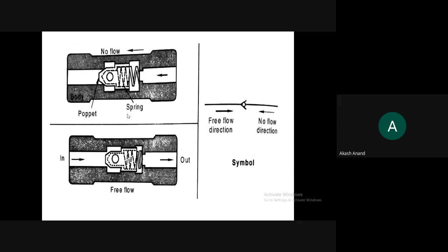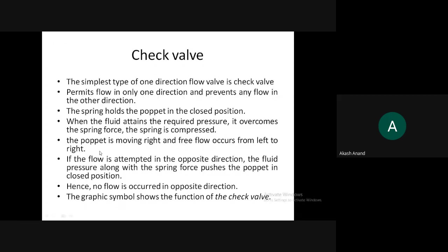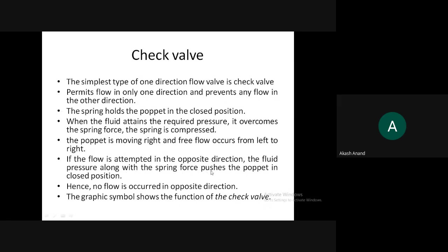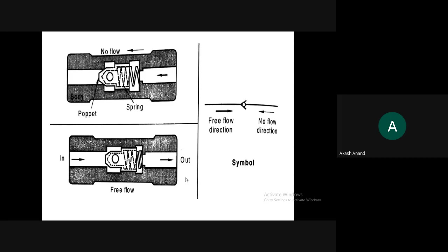If flow is attempted in the opposite direction, the fluid pressure along with the spring force pushes the poppet into the closed position, so no flow occurs in the opposite direction. The graphical symbol of a check valve shows an arrow mark representing the flow direction and a circle representing the no-flow direction.